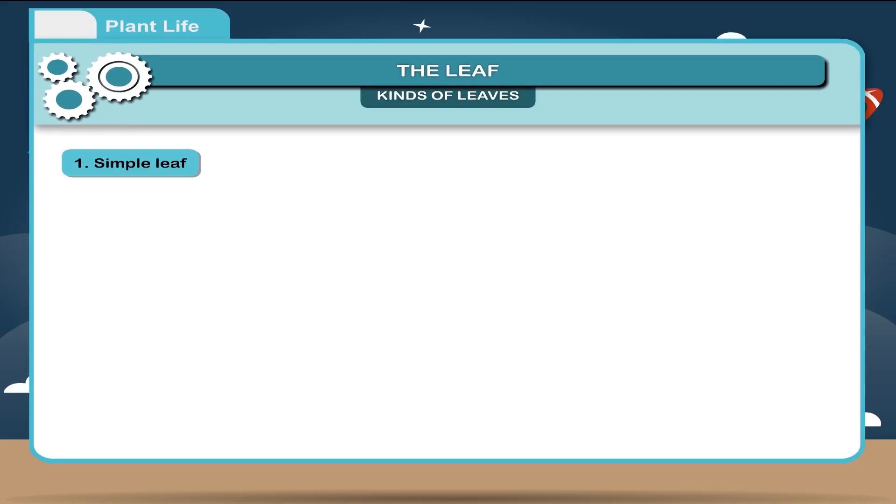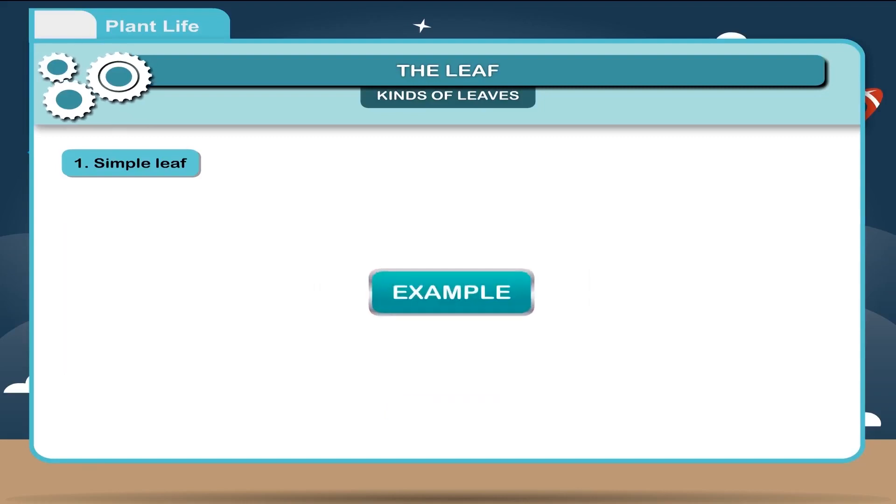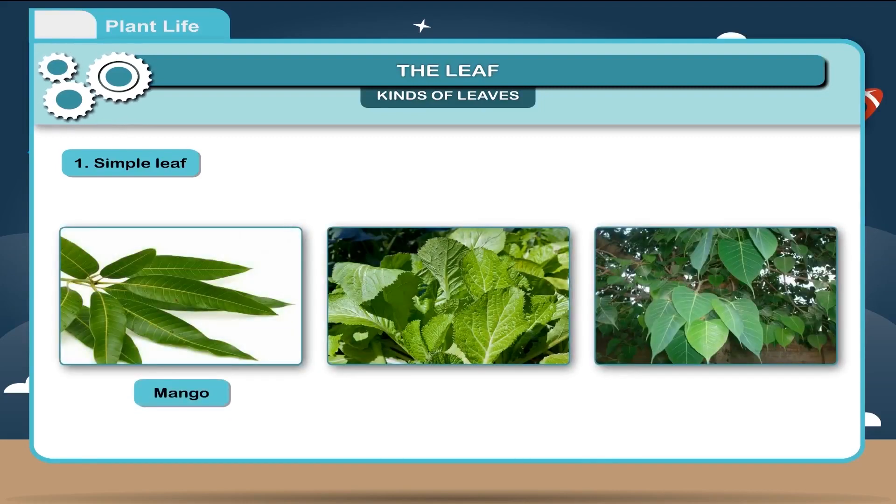First, simple leaf. It consists of single and undivided lamina without any cuts. In some cases, leaf blade is slightly incised. Example: leaves of mango, mustard, banyan, etc.